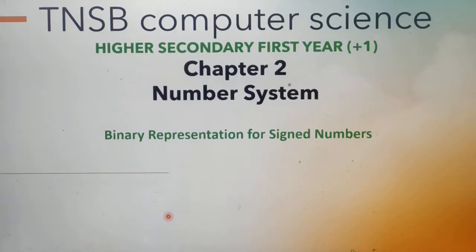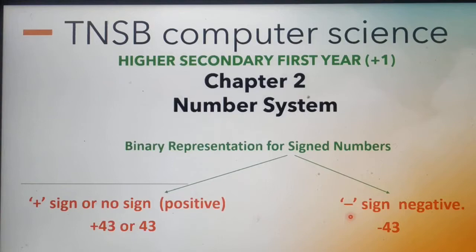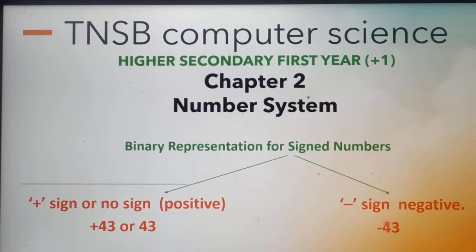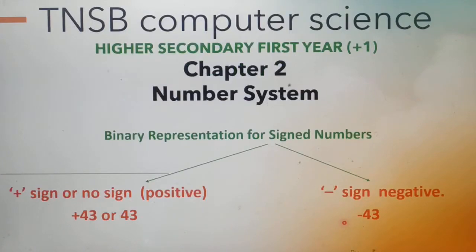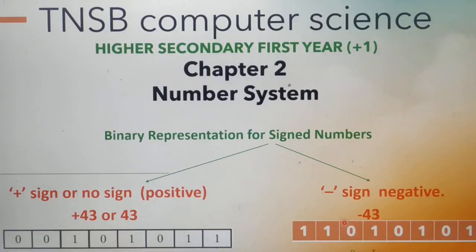Hi dear children. In this video we are going to see about binary representation for signed numbers from chapter 2. A number with a positive or negative sign is called a signed number. When we see a decimal number, we can easily tell whether it is positive or negative by its sign. But how is the computer going to understand this? Because the computer knows only binary numbers, which are in the form of 0 and 1. We will learn how to represent positive or negative binary numbers in computer memory.